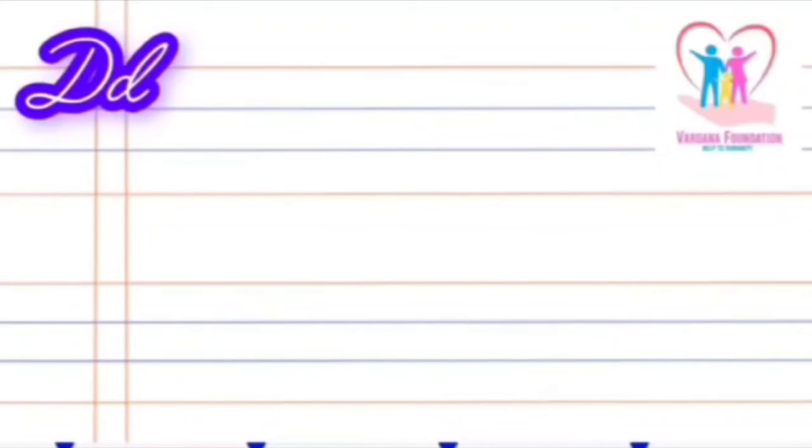Now we will learn how to write cursive letter D in four lines. Take a well sharpened pencil and remember do not pick up your pencil unless the whole letter is written.